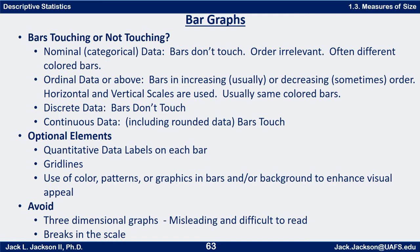Optional elements you could include on bar graphs: quantitative data labels on each bar giving the height, either on the bar or just above it. Horizontal grid lines are often present when using a vertical bar graph. You can also make use of color patterns or graphics in the bars or background to enhance the visual appeal.